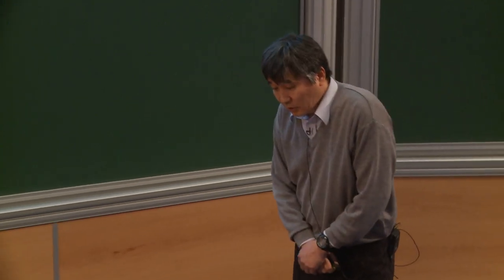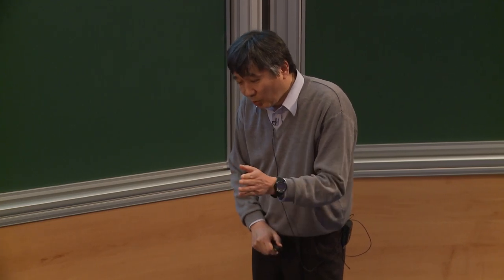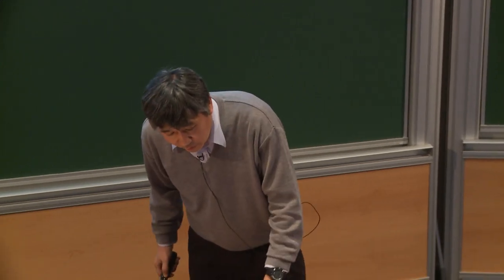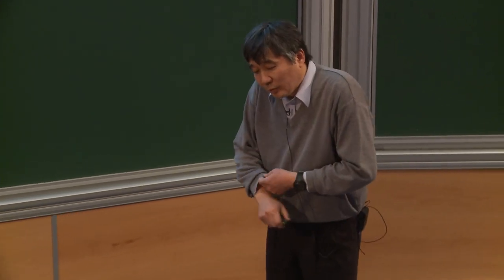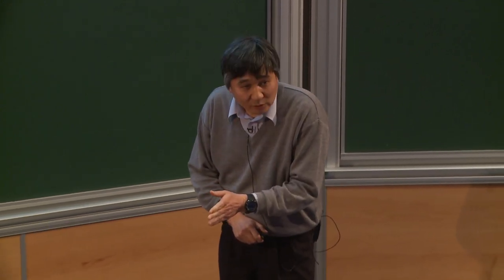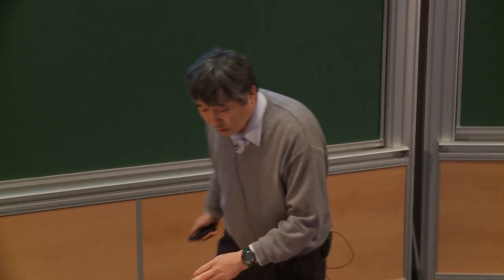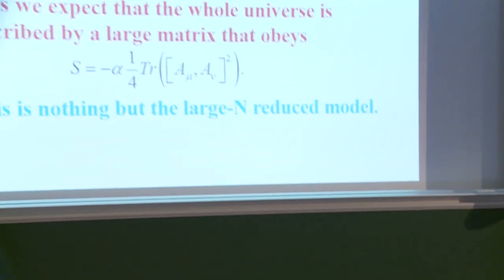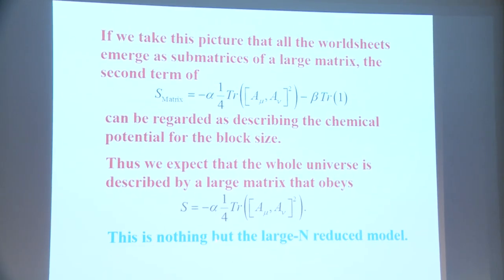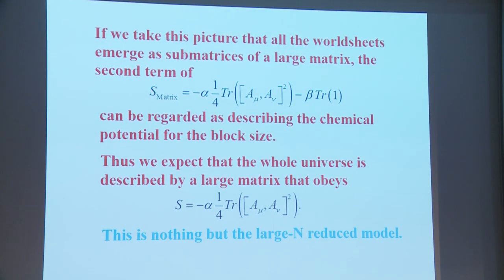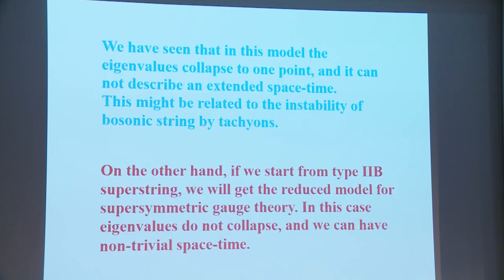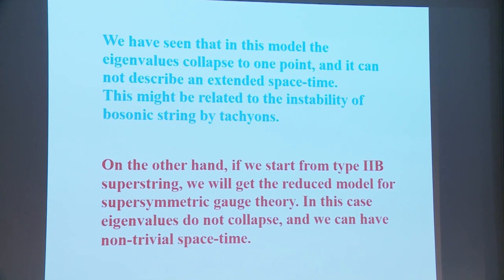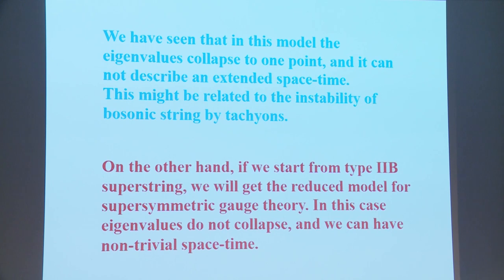For the bosonic case, if D=26 it is easy to keep modular invariance, but non-critical string theory above one dimension is not well understood. If you formally construct a matrix model, you can define the system for any dimension, but this is completely non-trivial. At any rate, for the bosonic case the theory cannot describe an extended space-time. If we consider supersymmetry, the eigenvalues can distribute and we can get a good theory, and for this to happen we need some special dimensions — specifically, we need 10 dimensions.